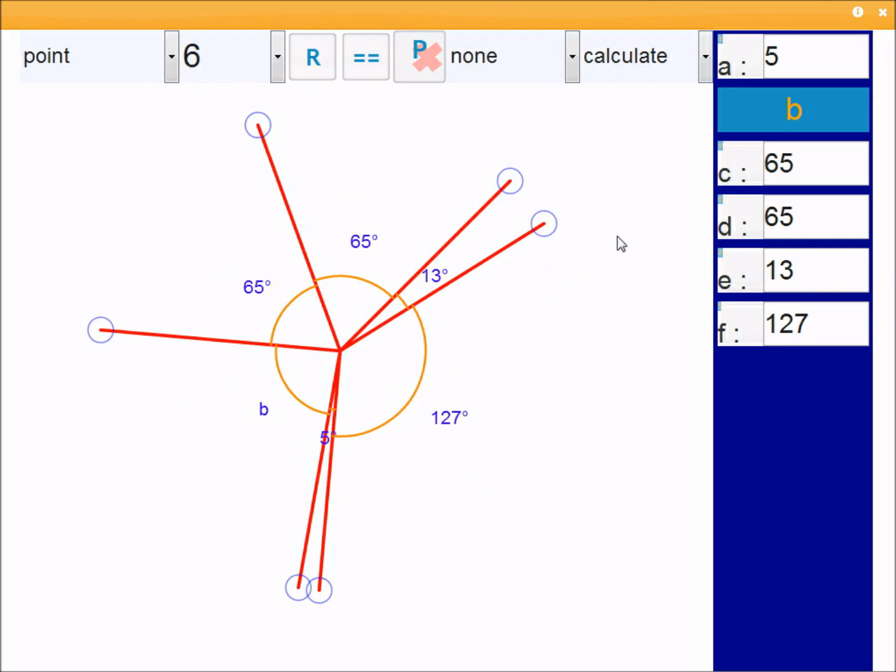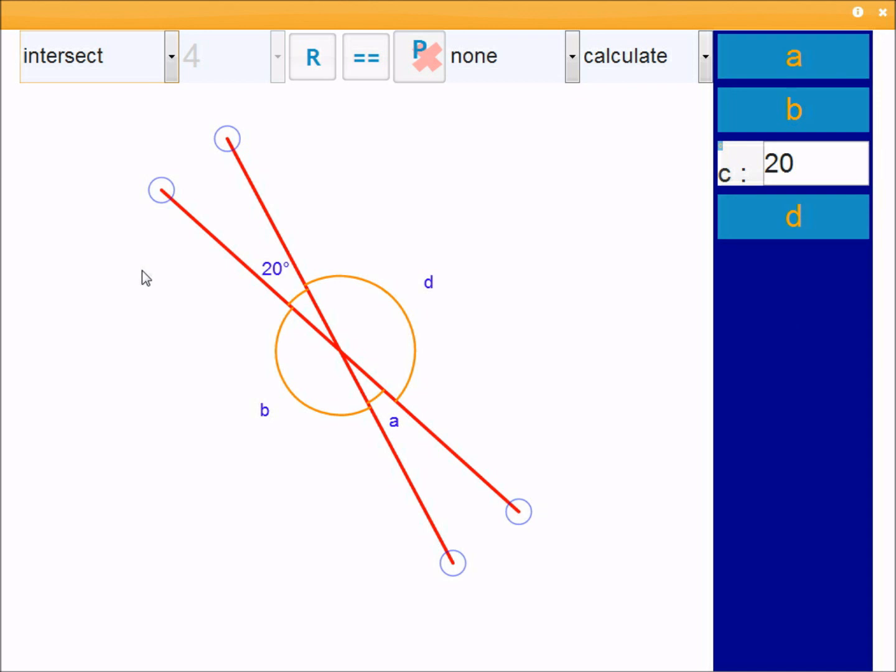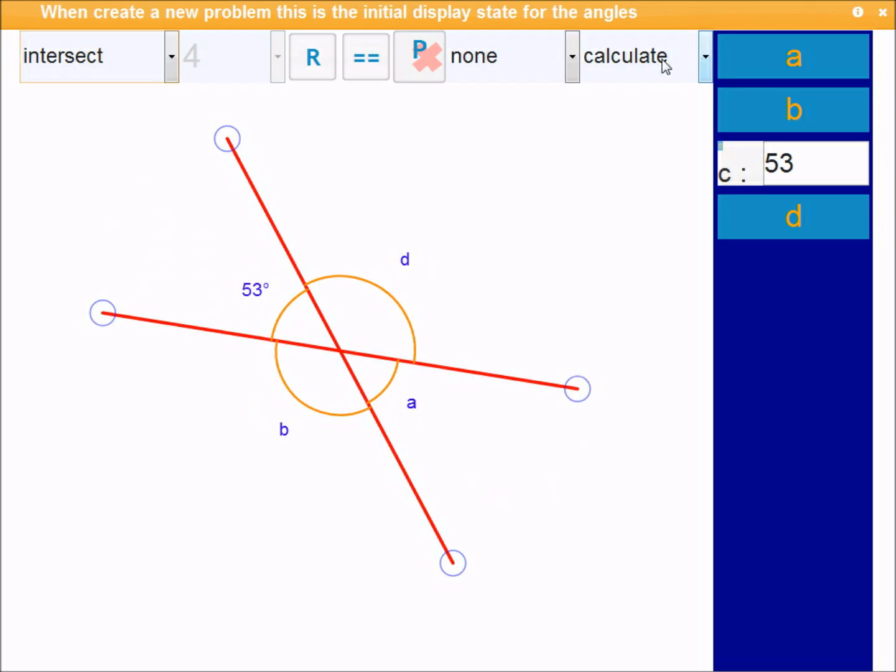Finally, we'll look at the last mode, which is intersect. This is angles where lines intersect. I've actually got this on calculate at the moment, and in this kind of problem, you can actually work out what every angle is. A here is going to be 53, because it's vertically opposite.